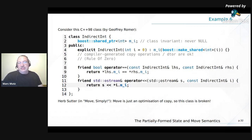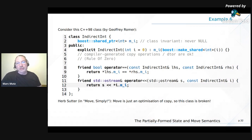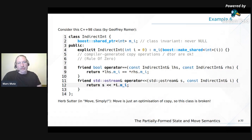But if you compile this with a C++11 compiler and a move-enabled Boost library, because you used the rule of zero you get move semantics for free — and a moved-from shared_ptr is null. So a moved-from indirect_int suddenly no longer adheres to the class invariant 'mi is never null.' Is this a problem? Herb maintains that 'move is just an optimization of a copy, so this class is broken.' But to see why it's NOT broken — it's completely okay as written — we need to go back 18 years and look at the original move semantics paper.